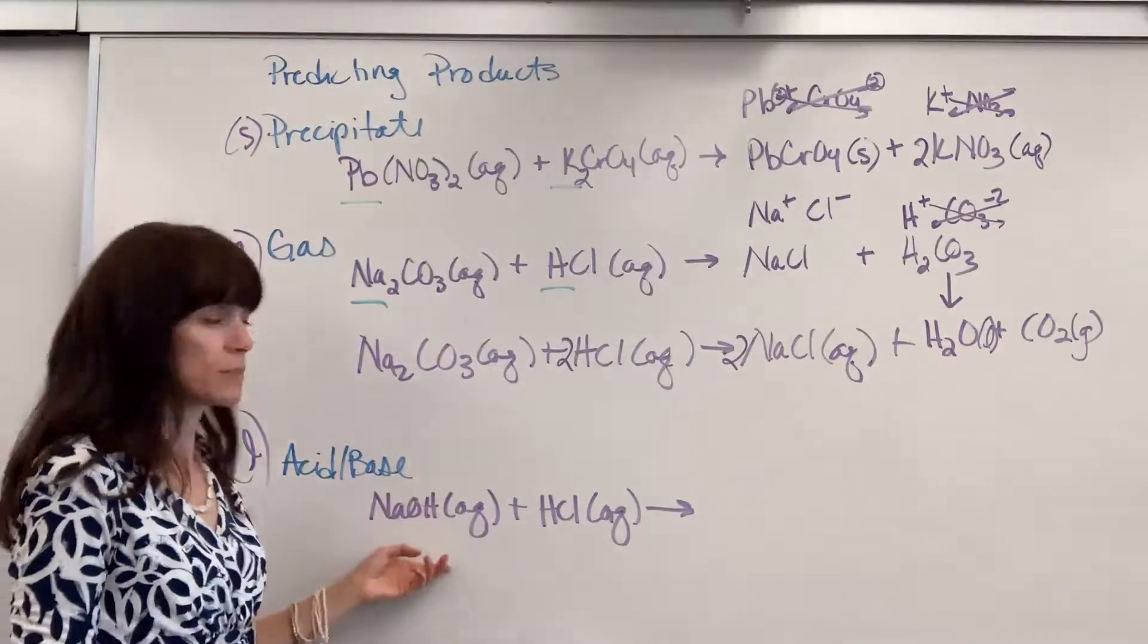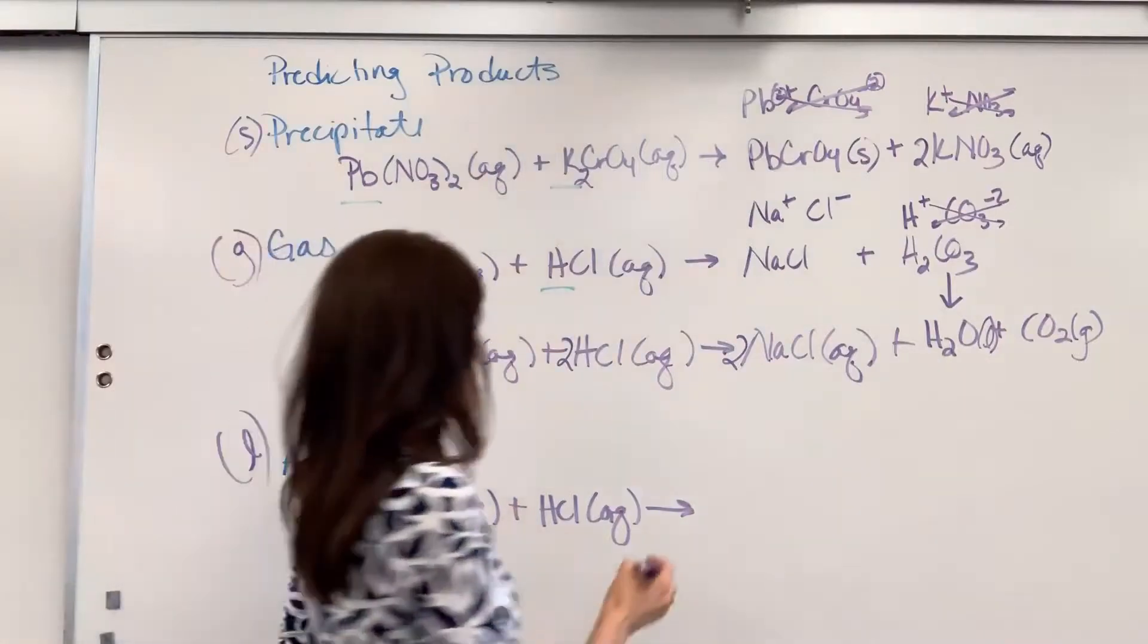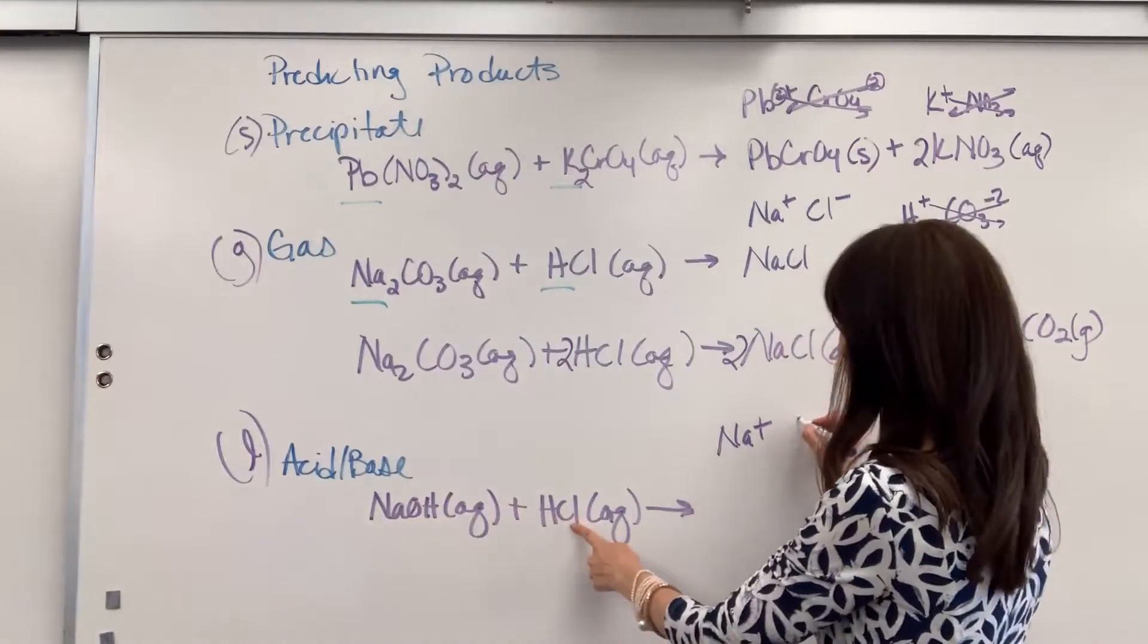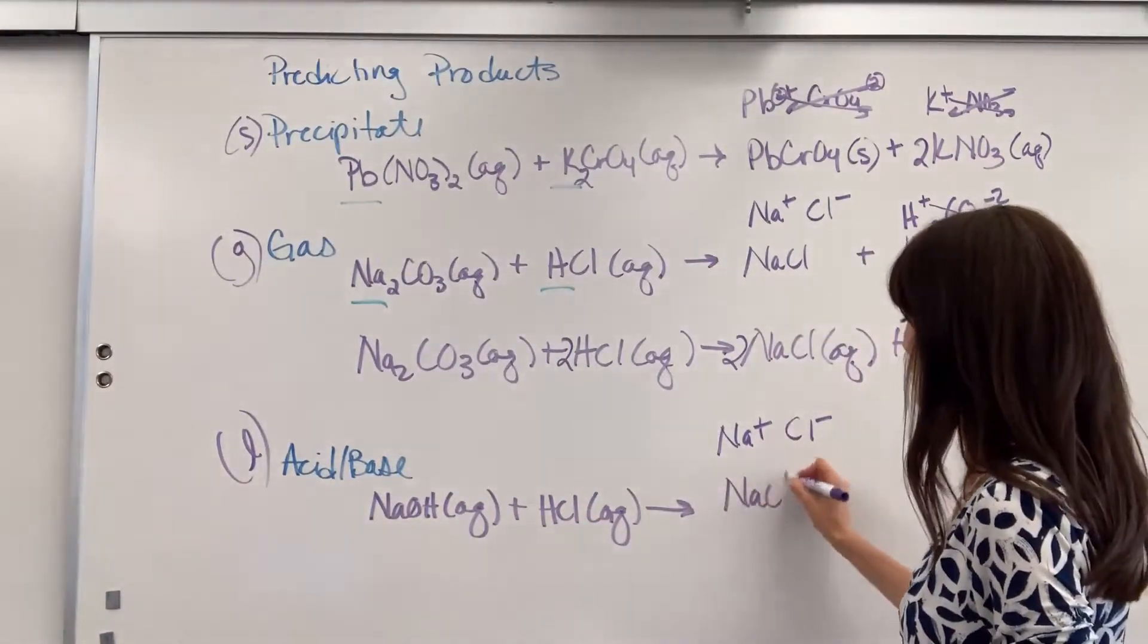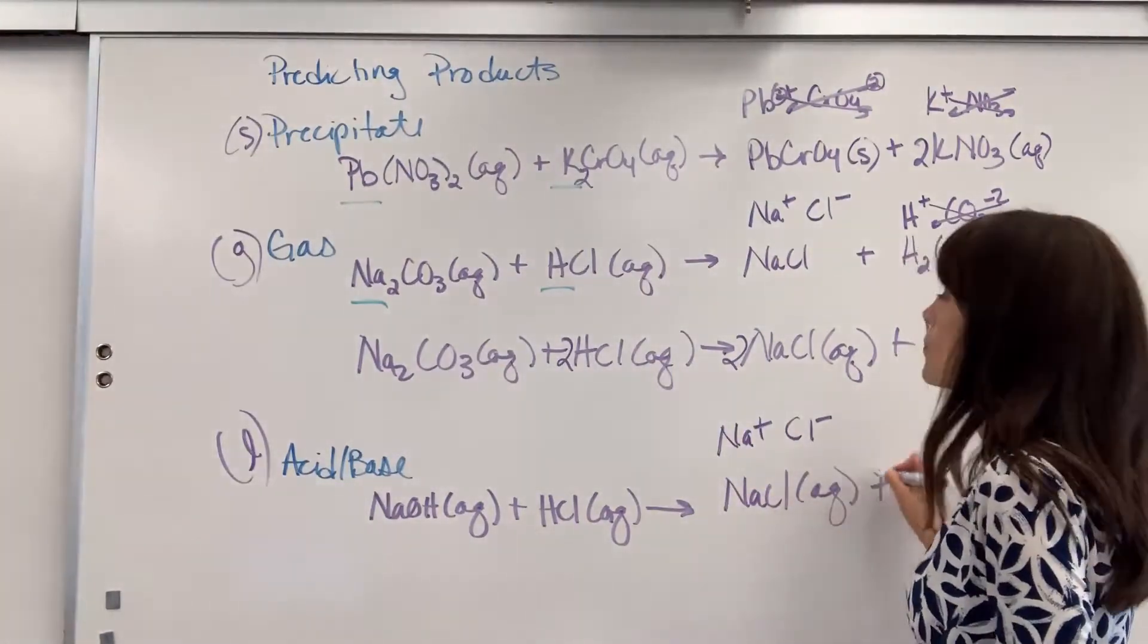Last one. Acid-base reactions. Again, we are going to switch the cations. I will go to our charges. You've got sodium is a plus. It's going to combine with the chlorine, which is a minus one. Gives us NaCl. Sodium is always soluble. So, you put aqueous on that.